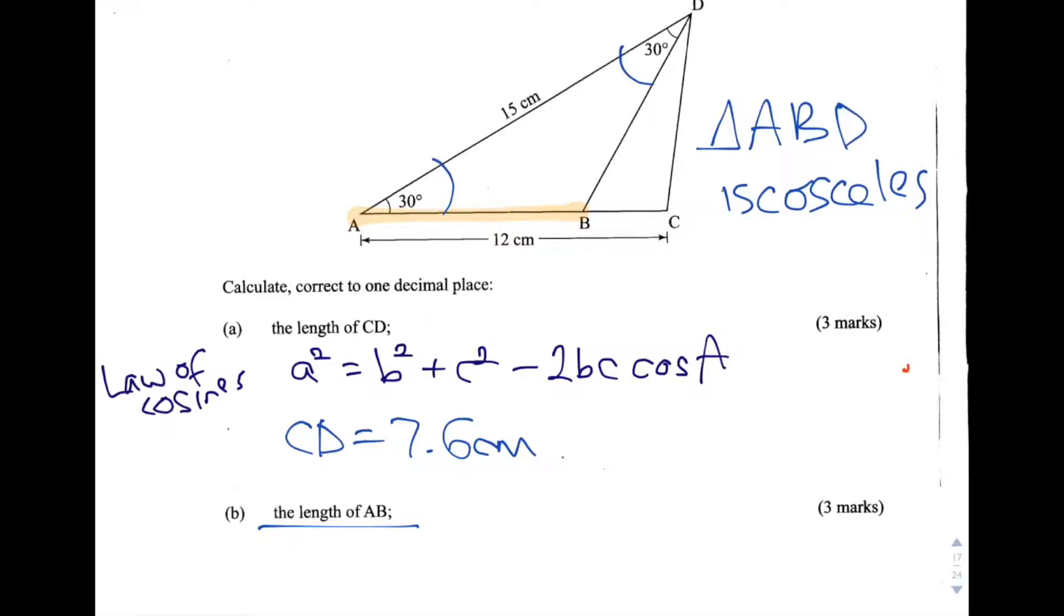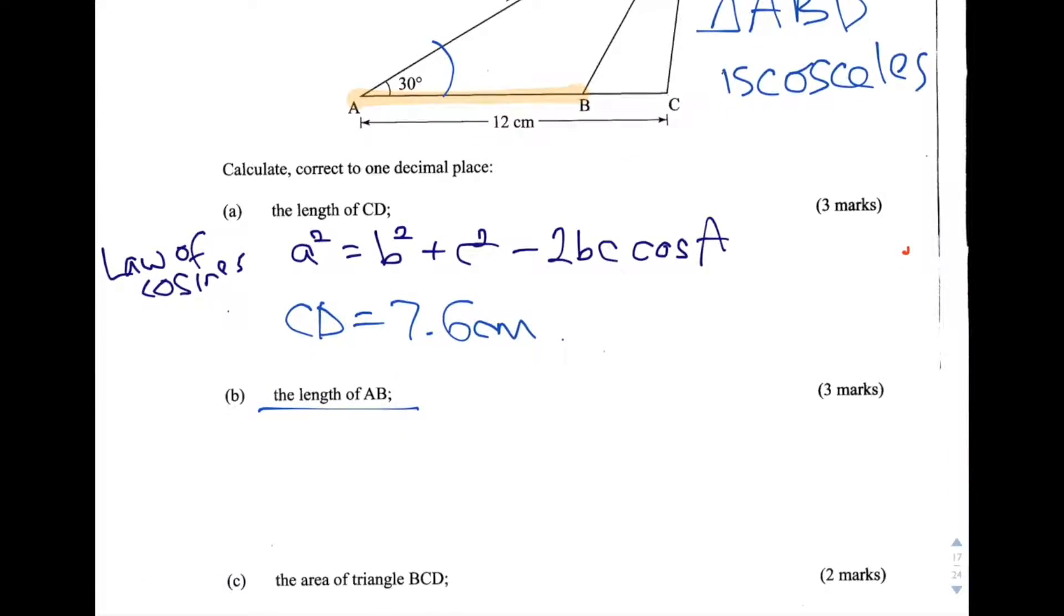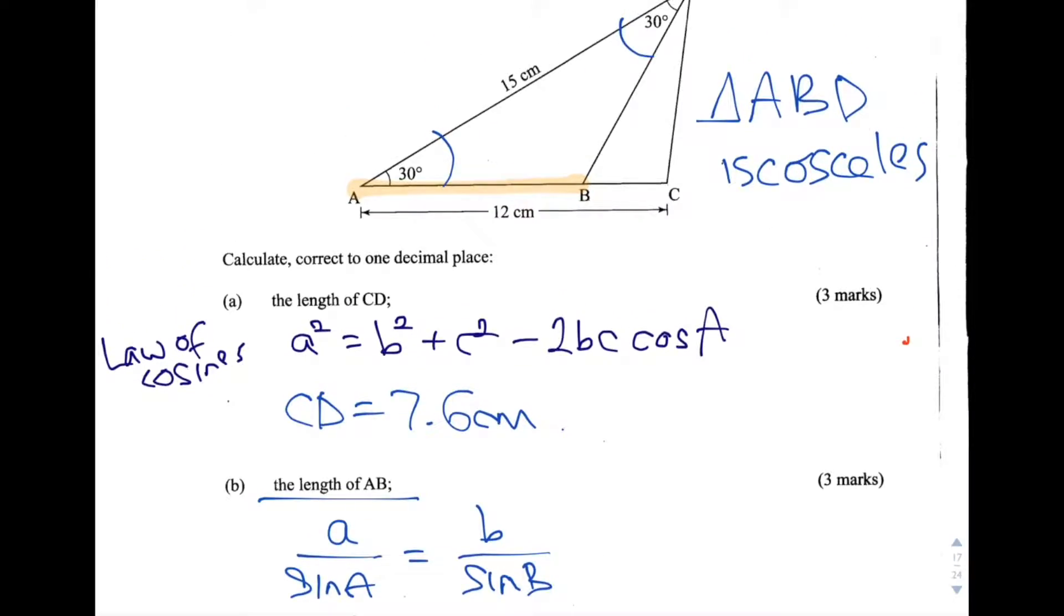Firstly, we're going to have to use the law of sines to solve this question. The law of sines is A over sine A equals B over sine B. That is to say, the ratio of a side to the sine of the opposite angle. So for this angle AB, the opposite angle is 30 degrees.